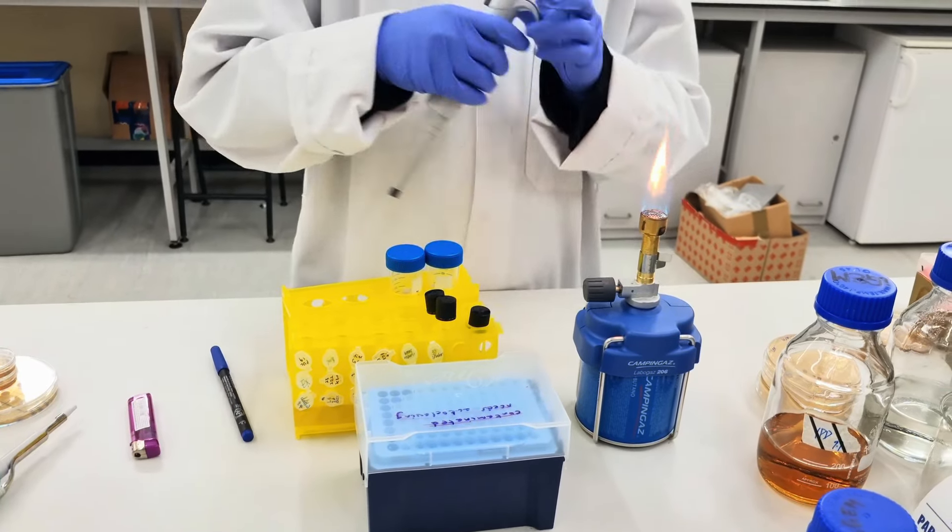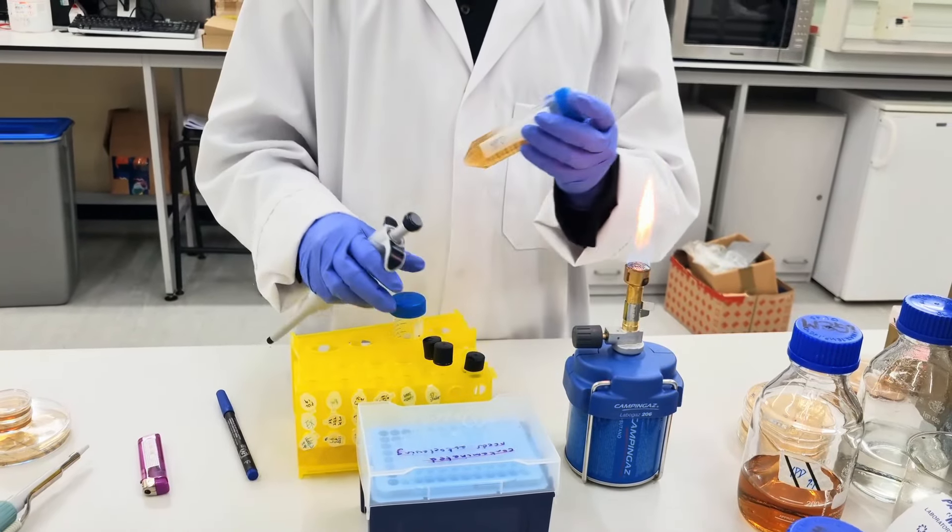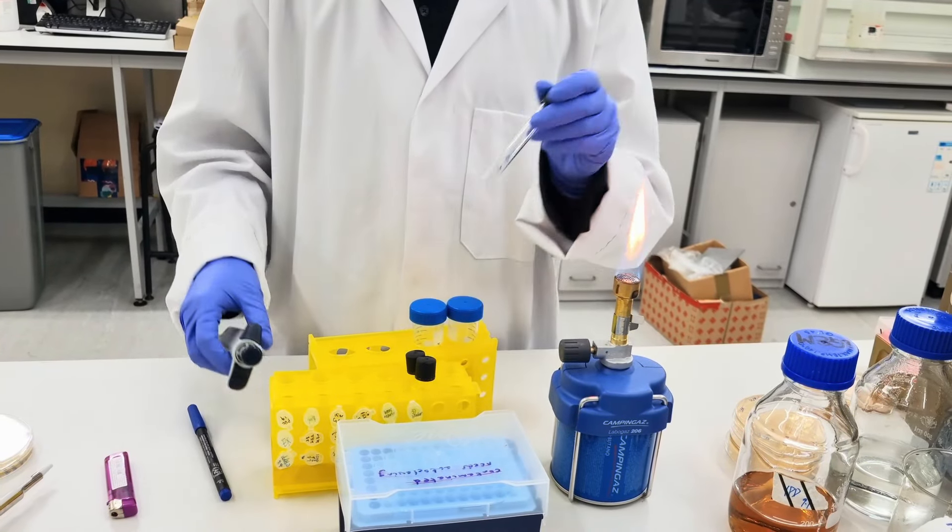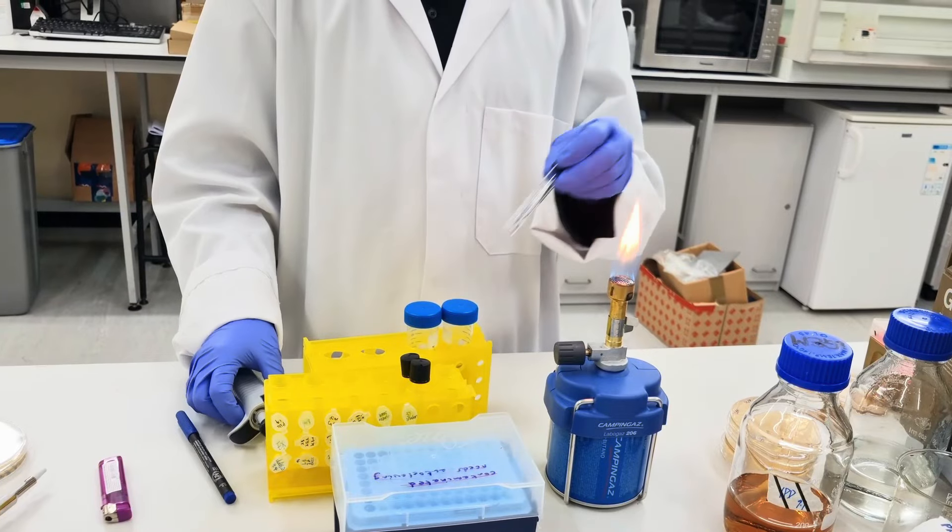The next step is to take some medium from your falcon tubes and transfer them into your culture tubes. Usually for one liquid inoculation we do three mils.